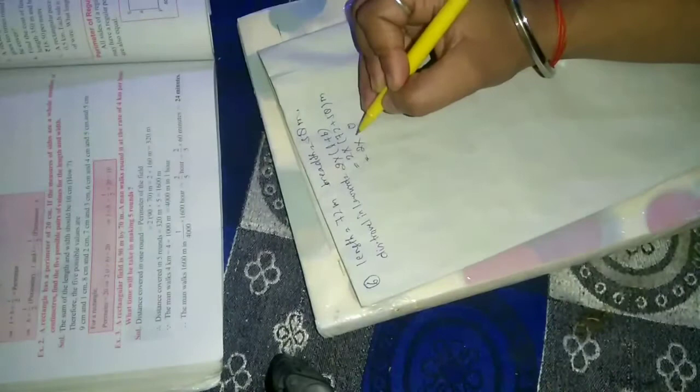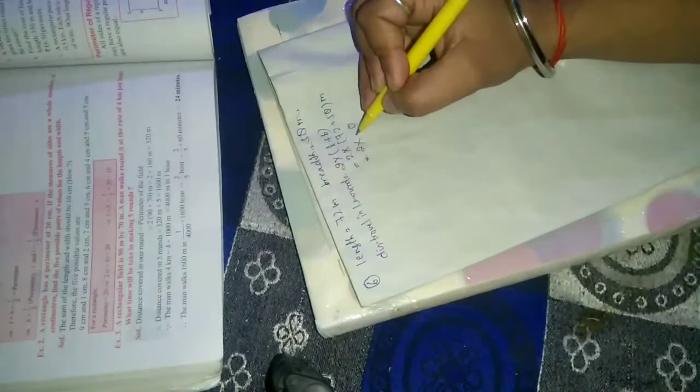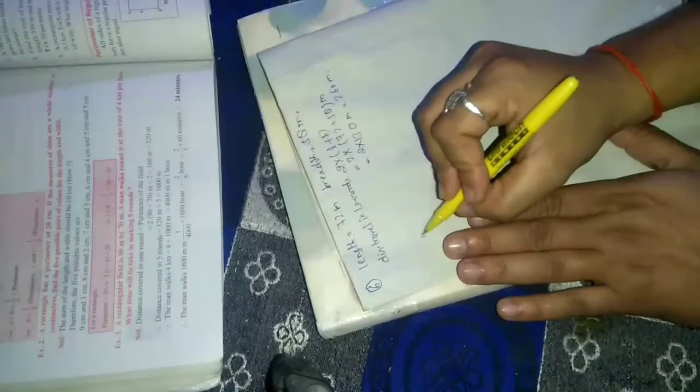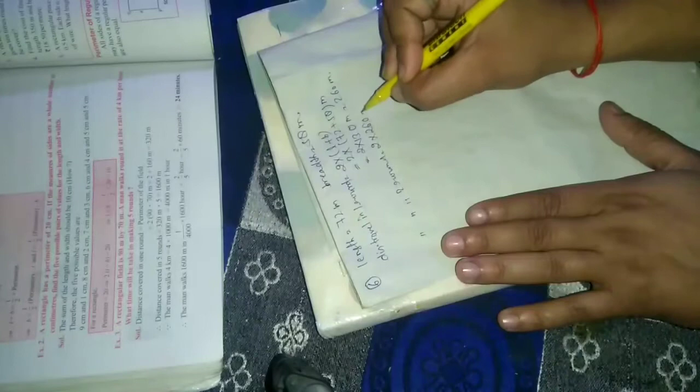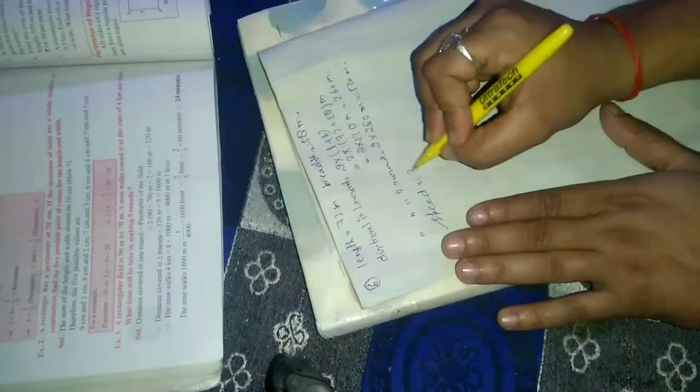Answer is 2 into 130 equals 260 m. So distance traveled in two rounds equal to 2 into 260 meter equals 520 meter. Speed, speed equal to 3 km per hour. This will be meter per second change, 3 km...